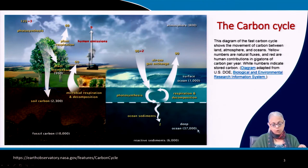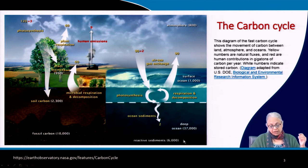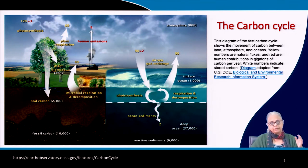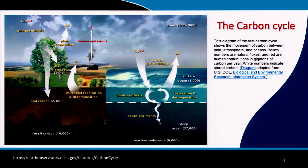Deep ocean sediments store 37,000 gigatons of carbon — the biggest amount, even bigger than fossil fuel carbon. Reactive sediments hold about 6,000 gigatons. Atmospheric CO2 is not stable; it is increasing exponentially over the last 50 to 100 years post-industrialization, mainly due to anthropogenic emissions.